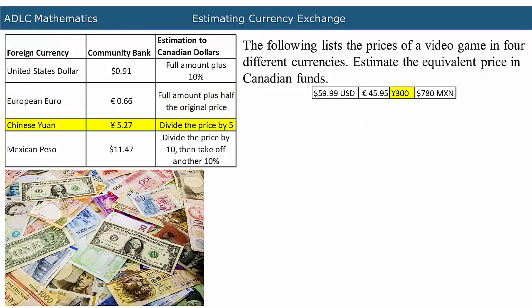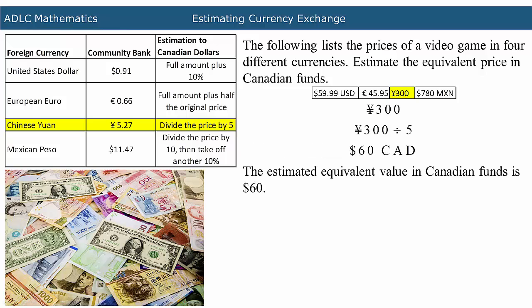Next, the Chinese yuan will be converted to Canadian dollars. The original cost is 300 yuan. Divide the original price by 5. The estimated equivalent value in Canadian funds is about $60.